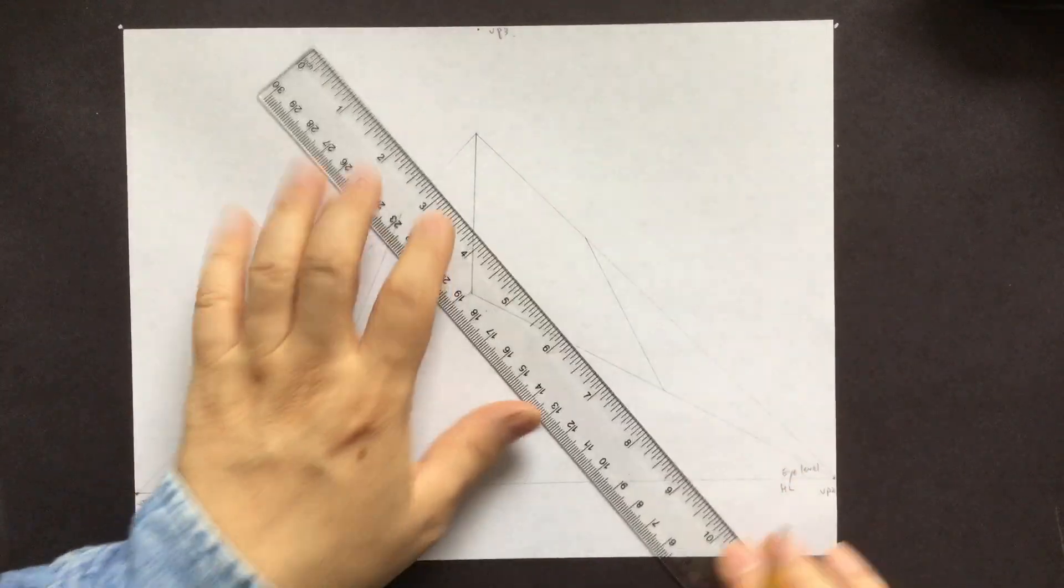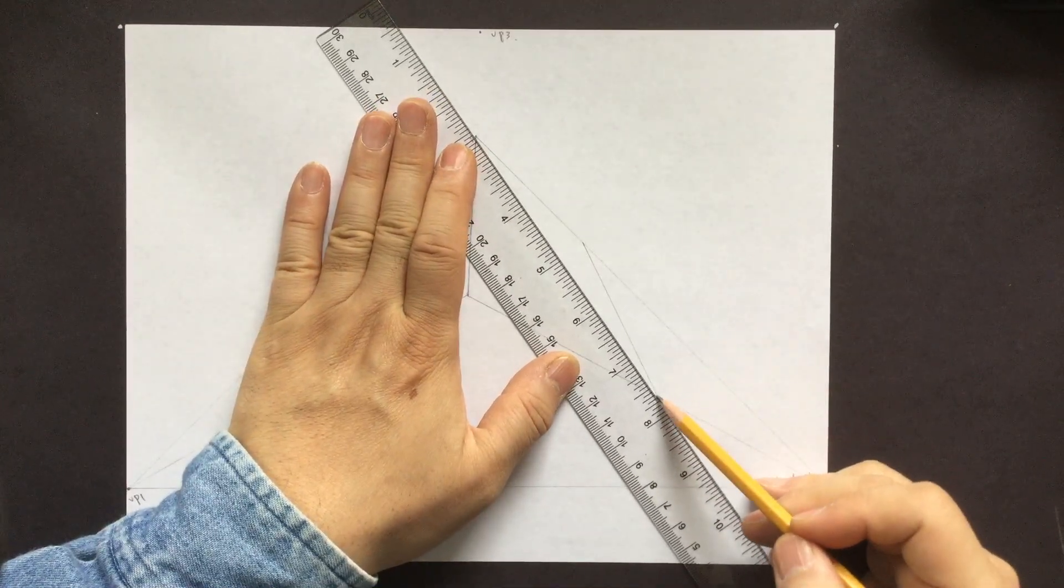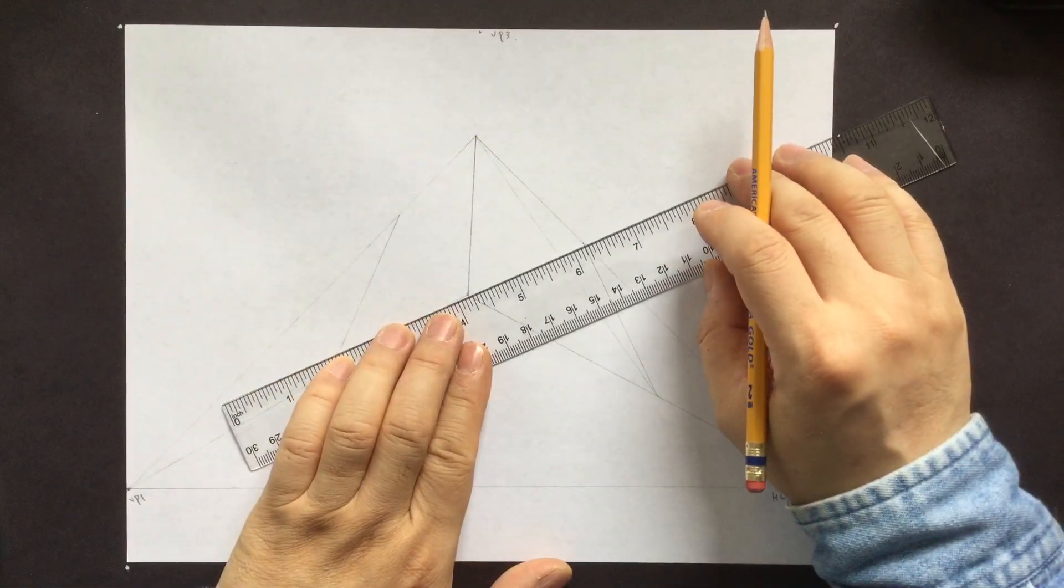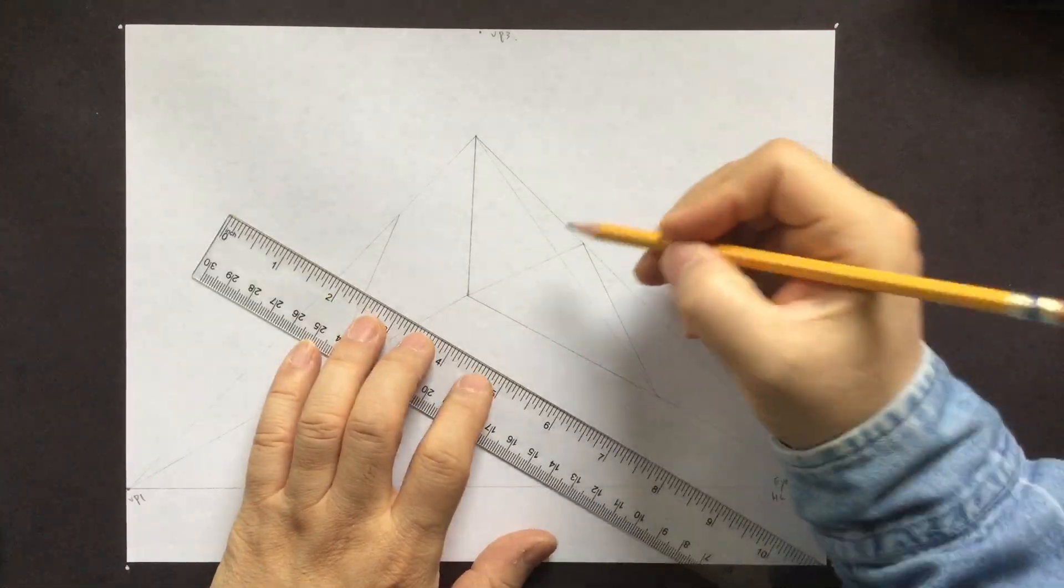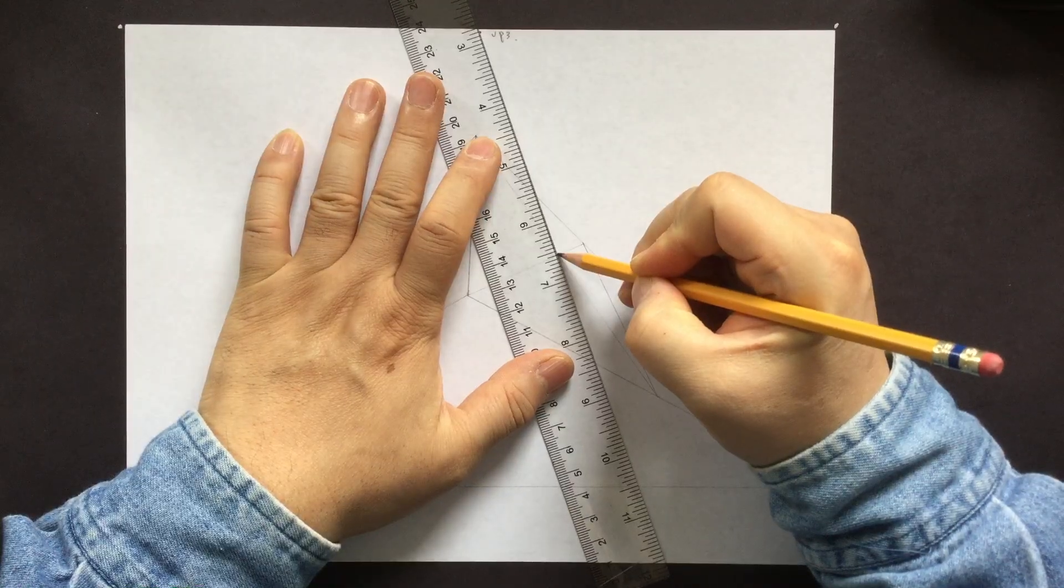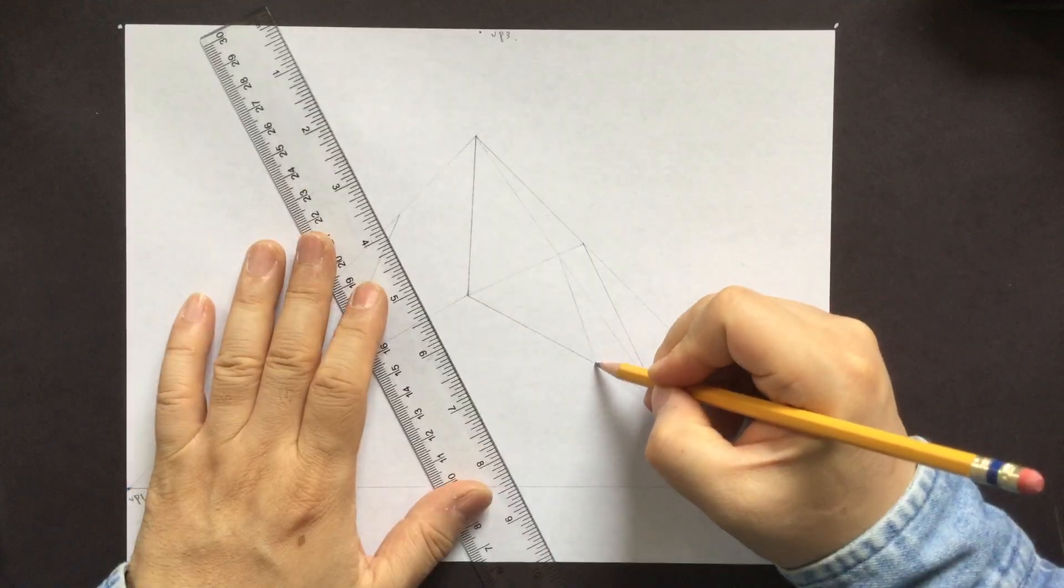So how to do that? You want to create an X to find the middle center. So connect that, and then this will be the center. All you have to do is connect it to the vanishing point three, and then draw the line down to find the middle. So that will be the middle.